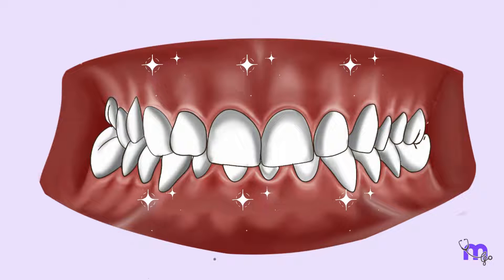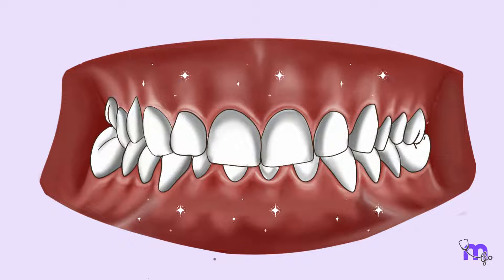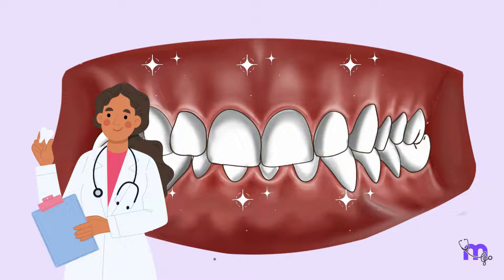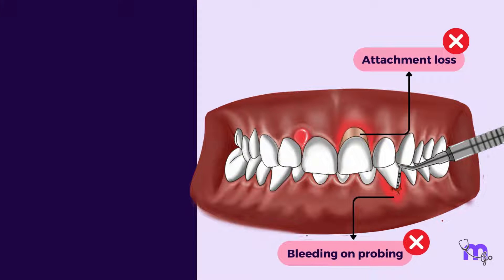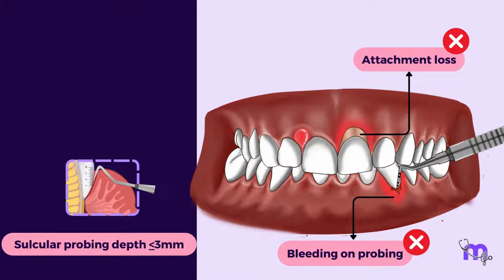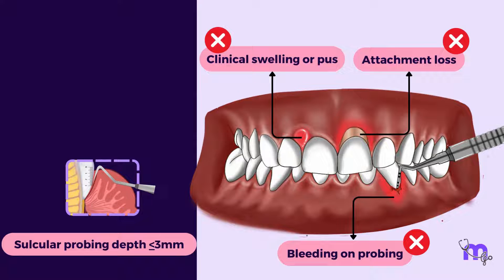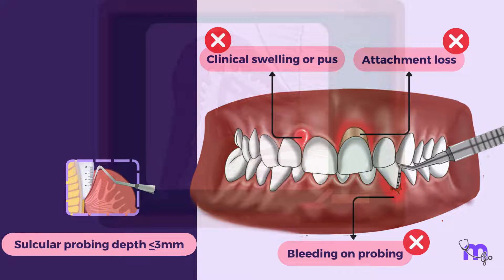Let us now define healthy GENGIVA. As dentists, it is important to understand how healthy GENGIVA appears. Pristine gingival health represents a rare but realistic entity and refers to a clinical condition with no attachment loss, no bleeding on probing, sulcular probing depth less than or equal to 3 mm, and no redness, clinical swelling or edema, or pus. This state of fastidious oral hygiene is rarely achieved clinically.